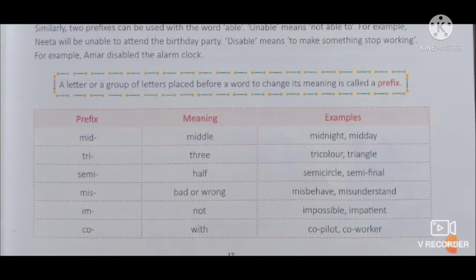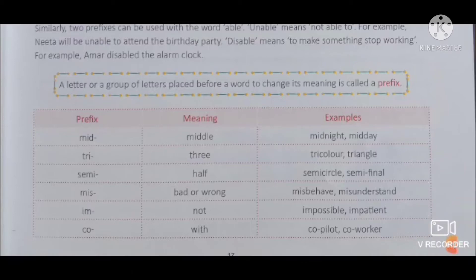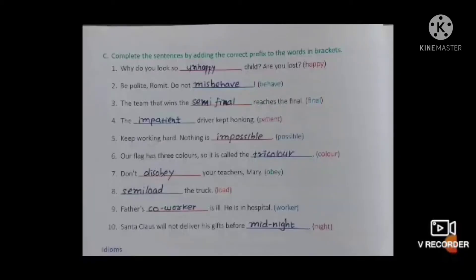Remember: mid means middle, tri means three, semi means half, mis means bad or wrong, im means not, co means with. There are many such words you need to find out and remember. Now we look at the exercise on page number 18 - complete the sentence by adding the correct prefix to the words in brackets.